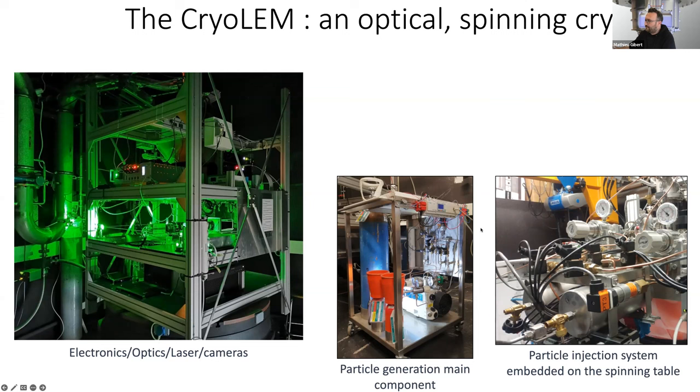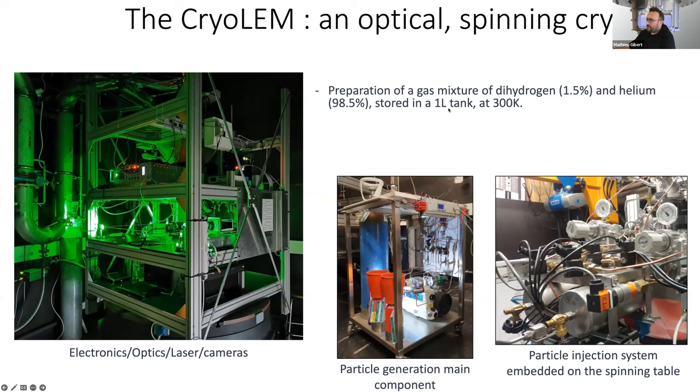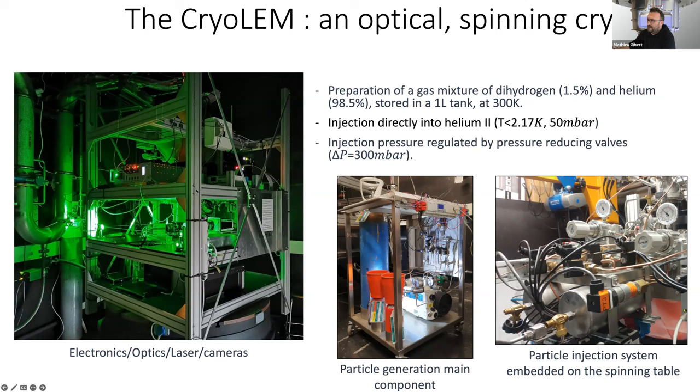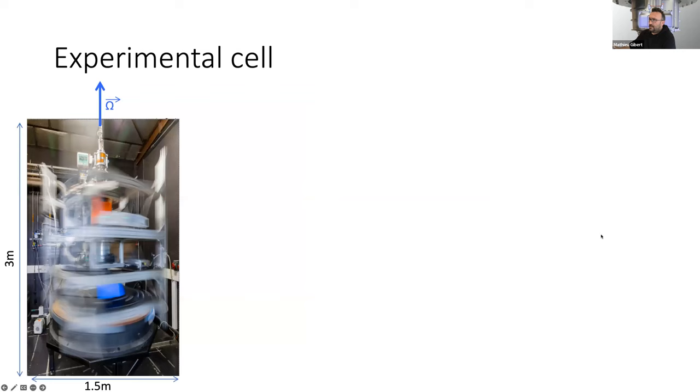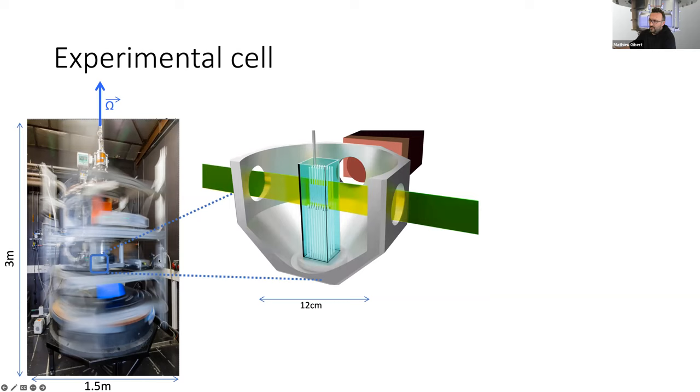The way we do particles is not very different from what Greg Bewley was doing back during his PhD, so it's a mixture of 1.5% of hydrogen at room temperature with 98.5% of helium gas, and then we inject directly this mixture into helium-2. Maybe one difference is that we control very finely the injection pressure and therefore the flow rate of the injection, thanks to this pressure reducing valve. Let's describe the experiment more precisely. There is a channel inside the chamber that is 2 by 2 centimeter and 10 centimeter high.